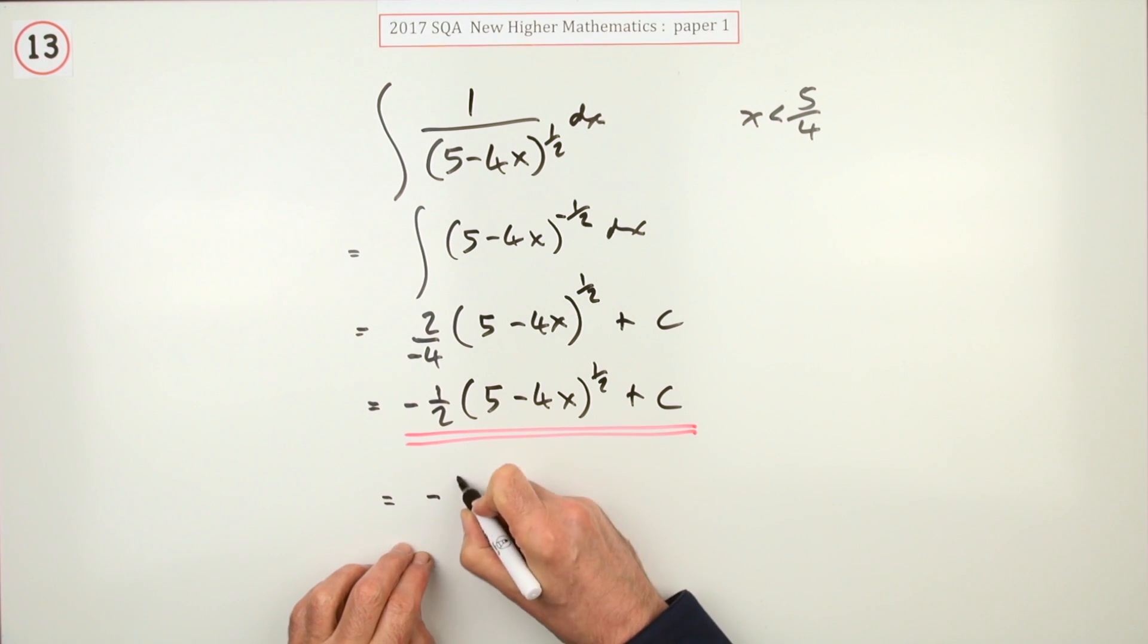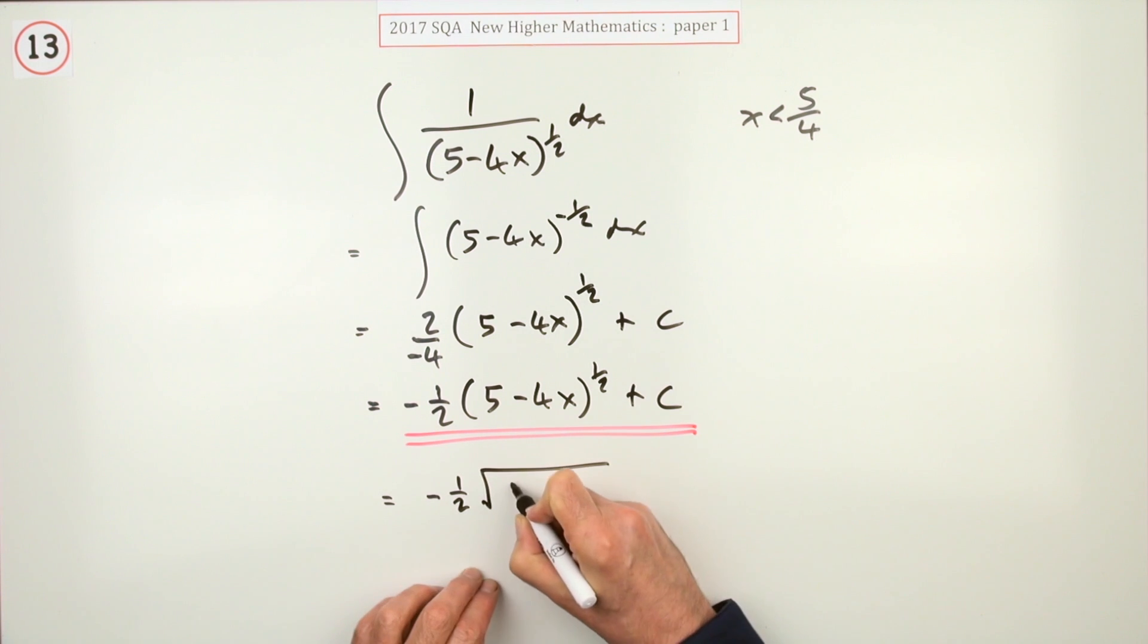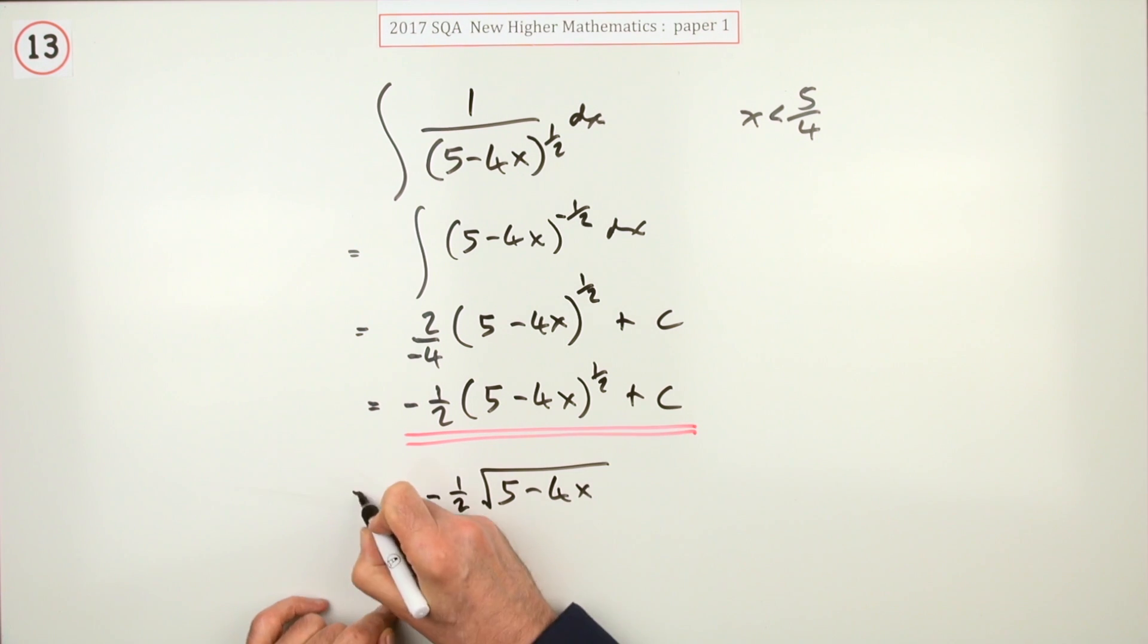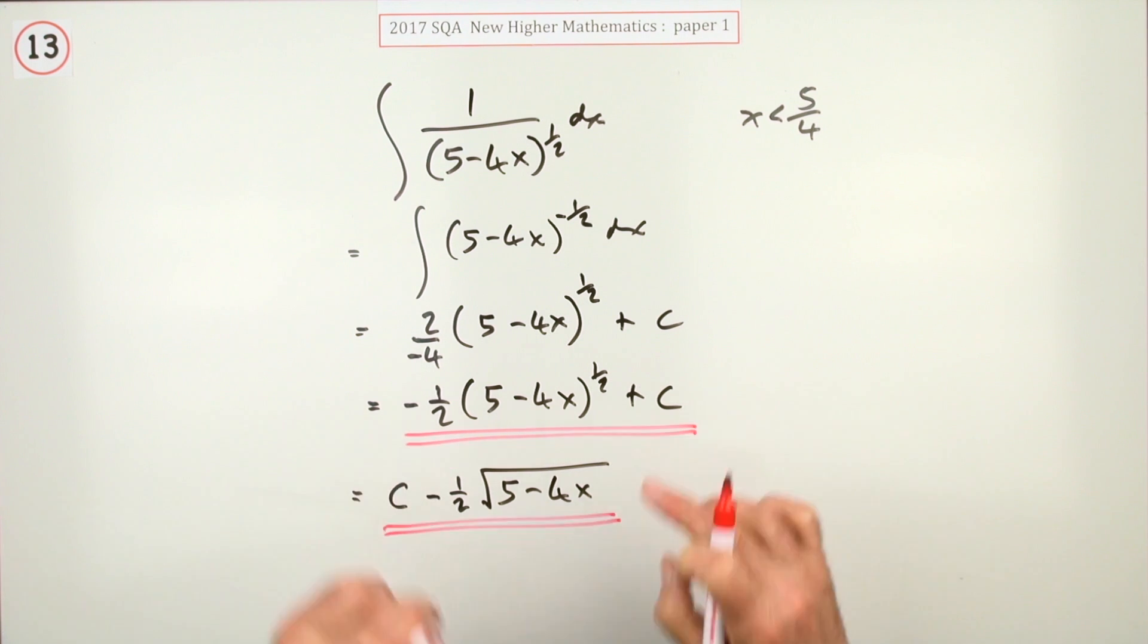But if you felt so inclined, you could always finish off as negative a half times the square root of five minus four x. And if you wanted to be neater, instead of having that subtract sticking out the front, you could put the C in front of it. But I don't believe that would be necessary, and that would be the full marks.